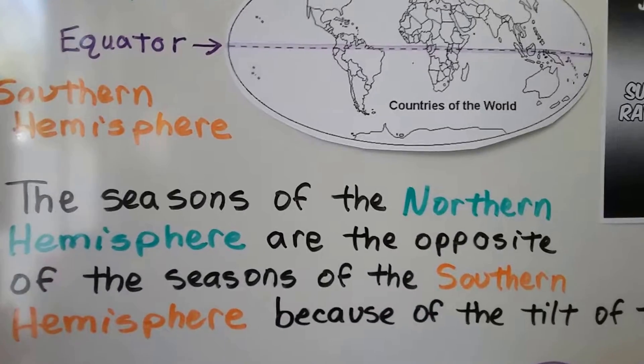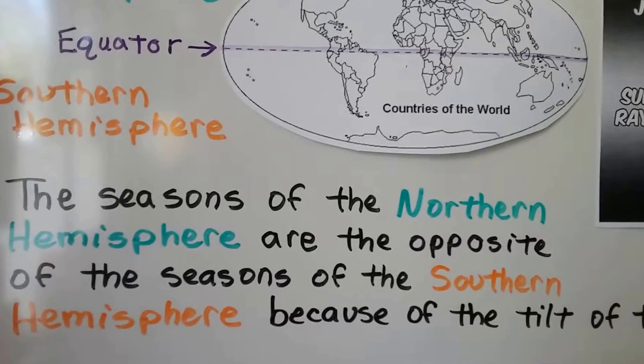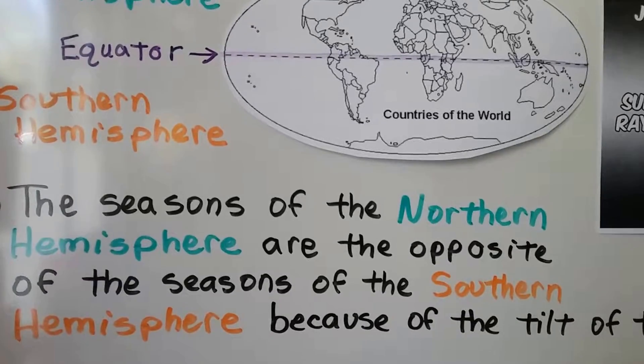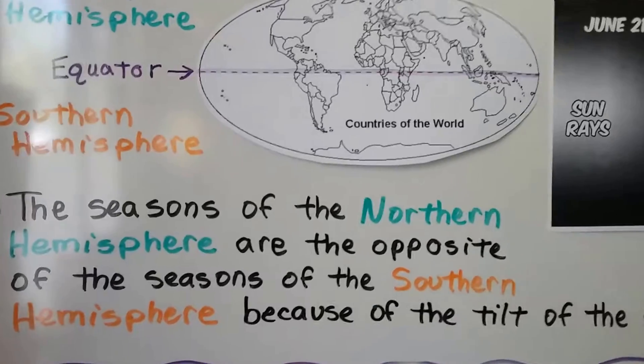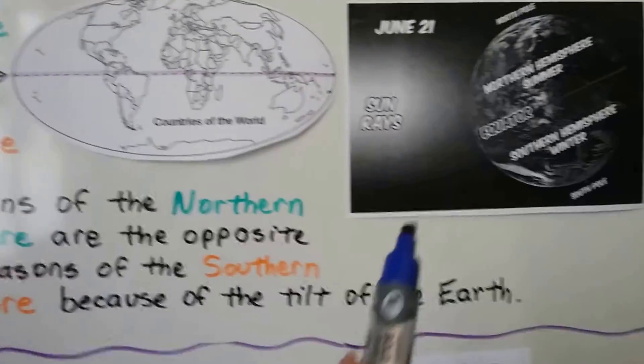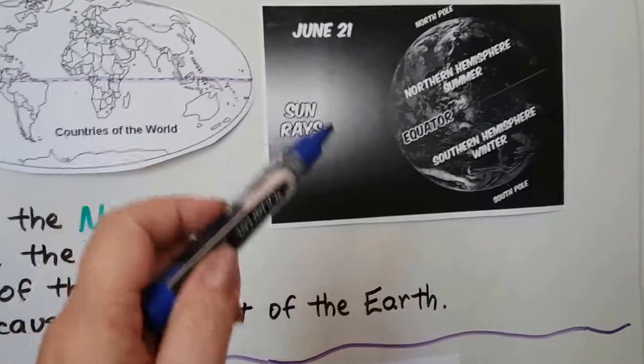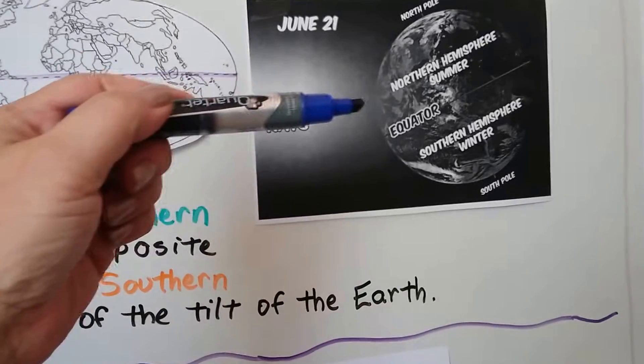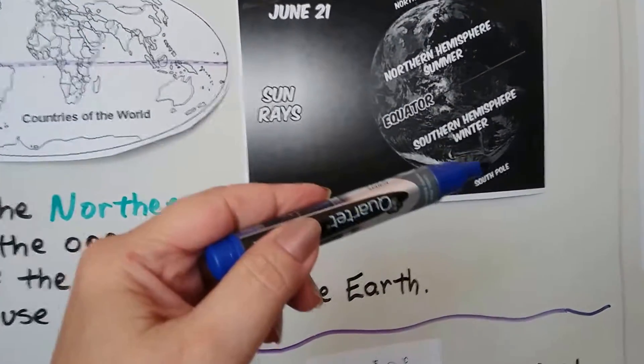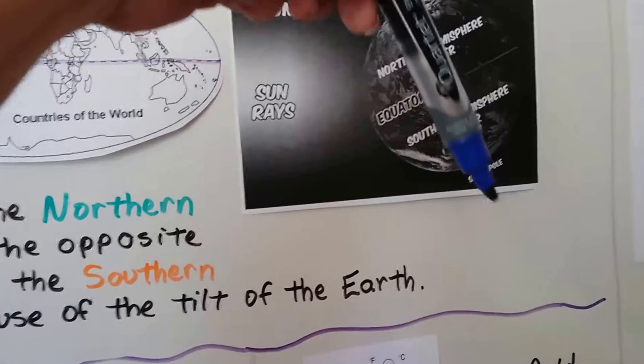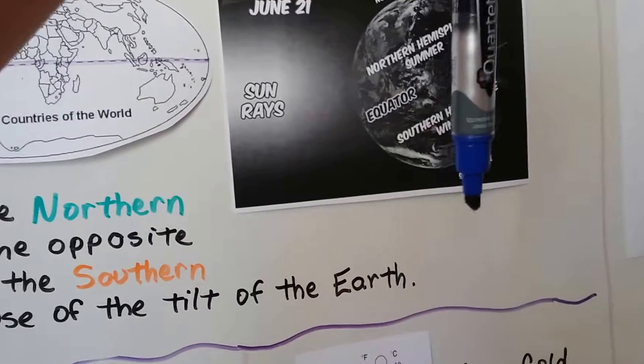The seasons of the northern hemisphere are the opposite of the seasons of the southern hemisphere because of the tilt of the earth. Here's the sun and it's shining on the earth. Here's the north pole and here's the south pole and you can see it's kind of tilted like this. It's not straight up and down, it's tilted.